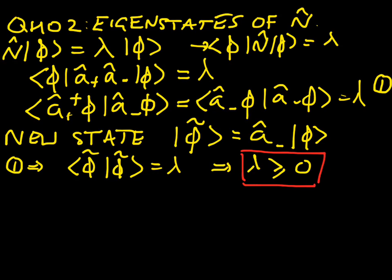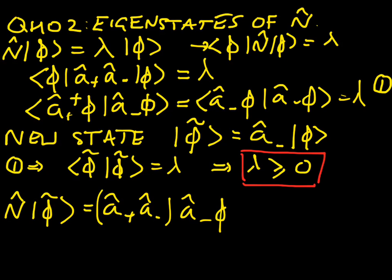So now, let's think about what happens when we act with n-hat on our state phi tilde. We're going to substitute in for both n-hat and phi tilde, and we'll see that we've got a-plus, a-minus. That's just n-hat, remember. And then we have a-minus ket phi. Now, we can use the commutator of a-plus and a-minus.